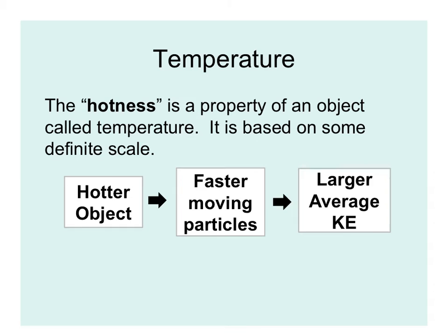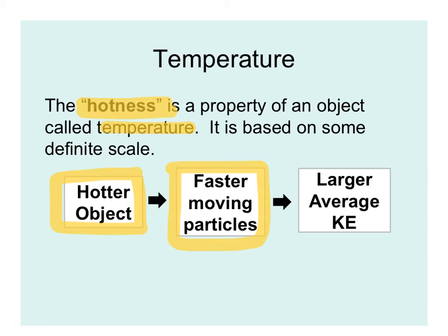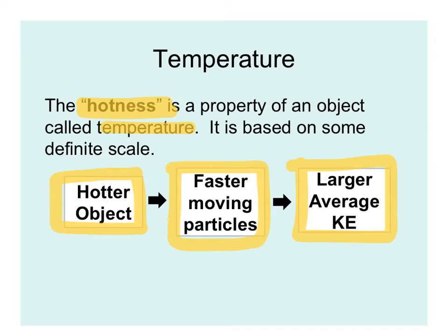Before we talk about temperature scales, remember: hotness is just the property called temperature, based on a definite scale. The hotter an object is, the faster its atoms and molecules are moving, meaning on average its kinetic energy is larger. Here in the United States we use Fahrenheit, but around the world Celsius is used, and Kelvin is used in the scientific community. You need to be able to convert between all three scales.